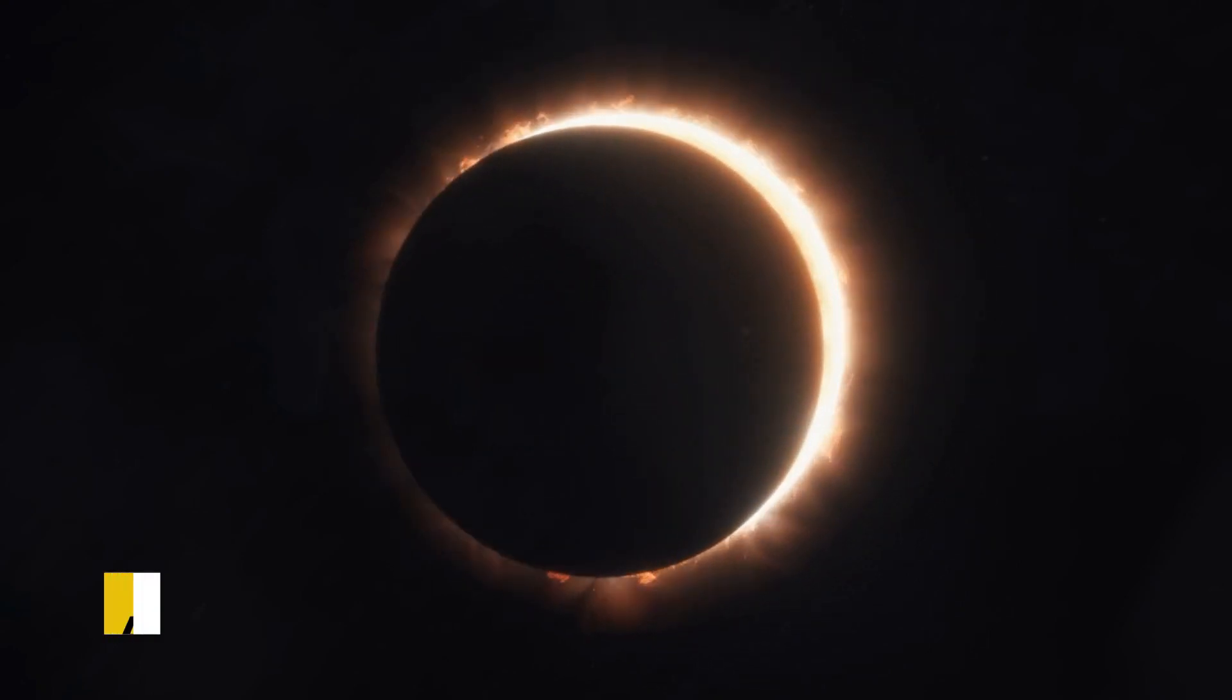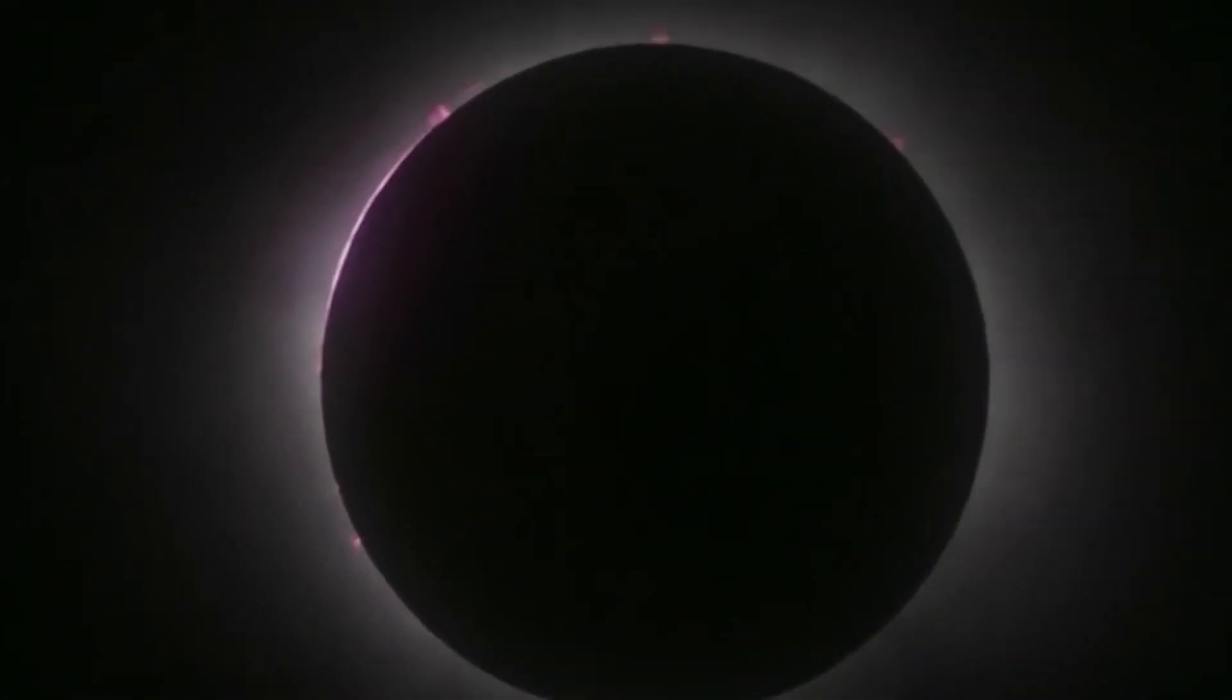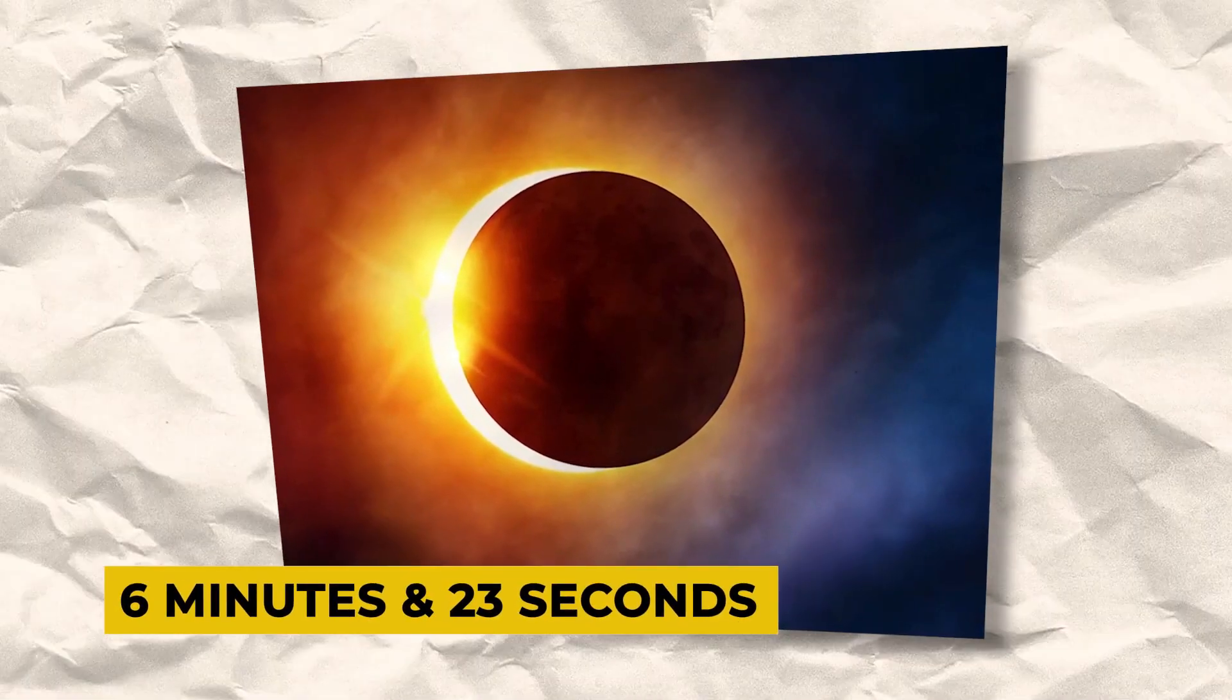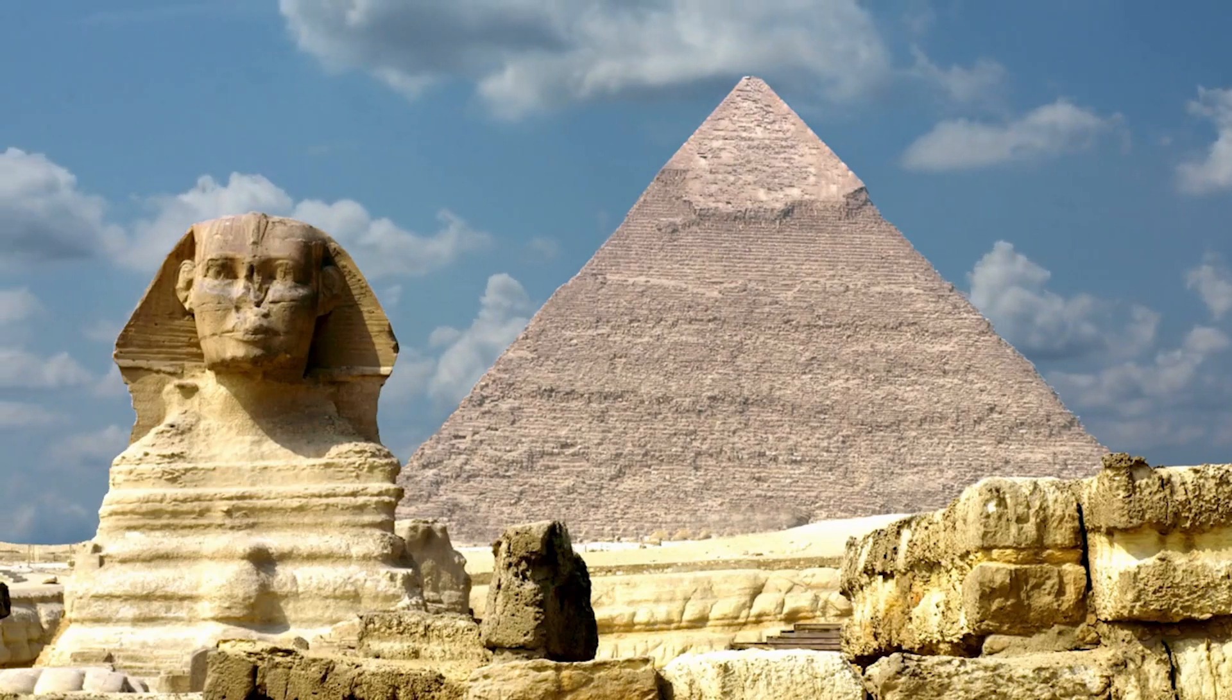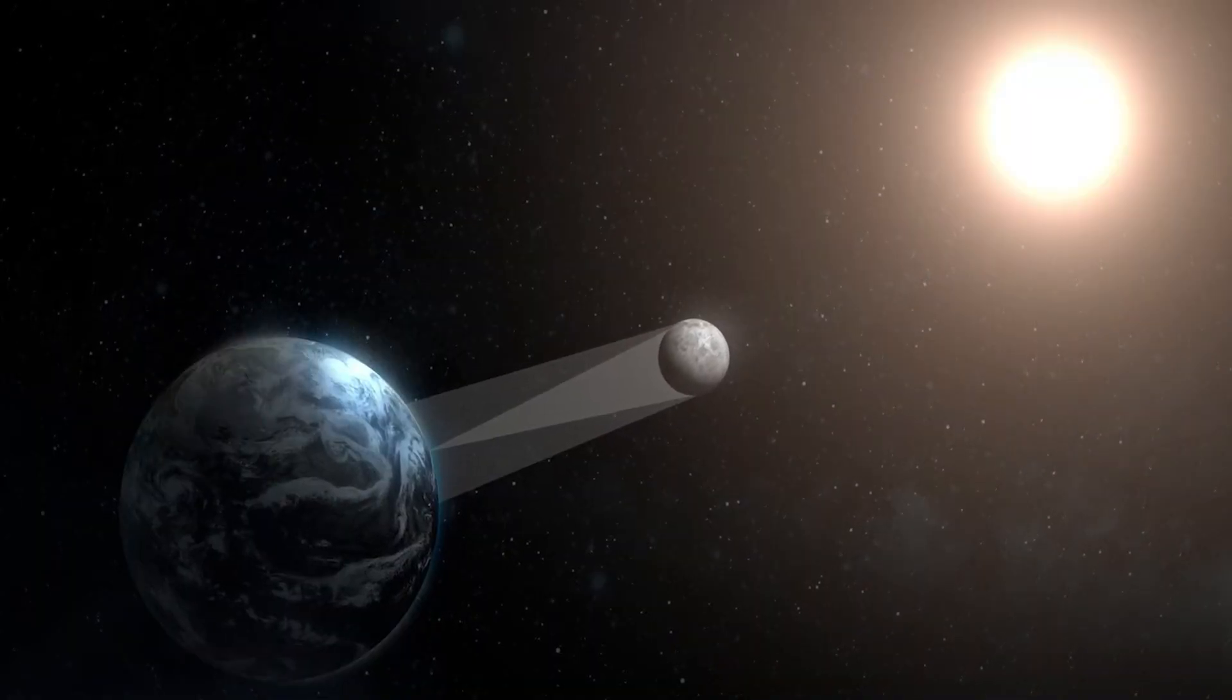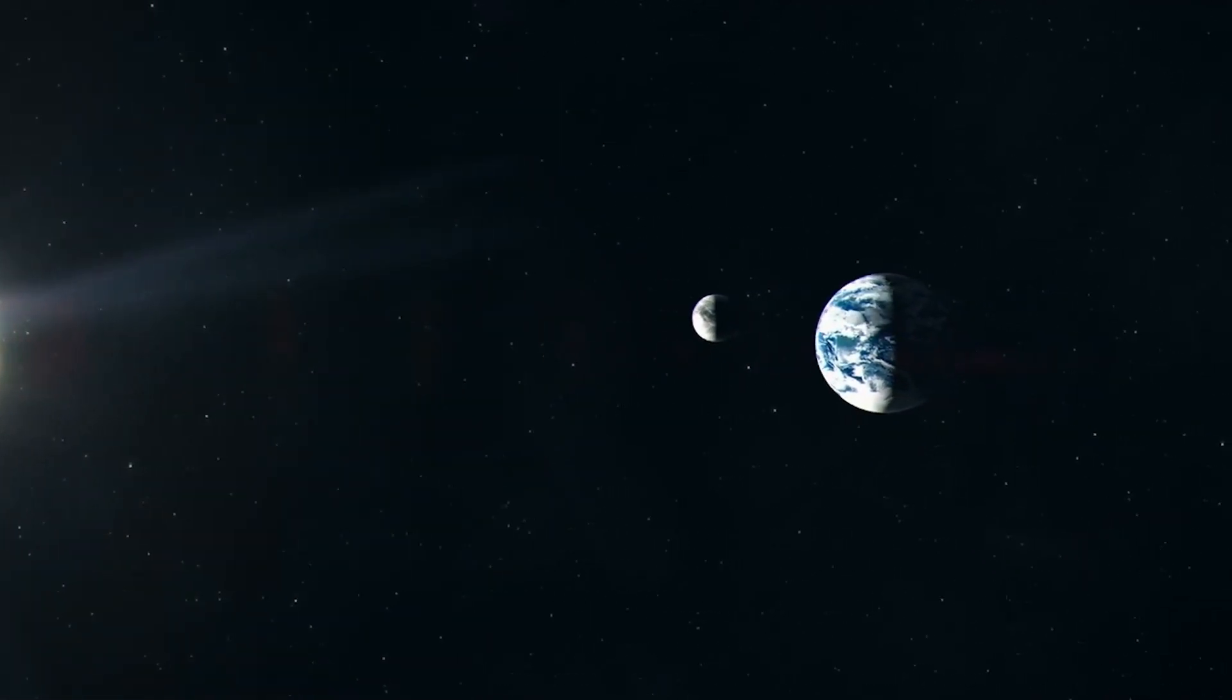Starting with the total solar eclipse on August 2, 2027. This event promises a mesmerizing display as the moon obscures the sun, casting a shadow over the Earth for an impressive 6 minutes and 23 seconds. The spectacle will be particularly striking in Luxor, Egypt, attracting skygazers from far and wide.